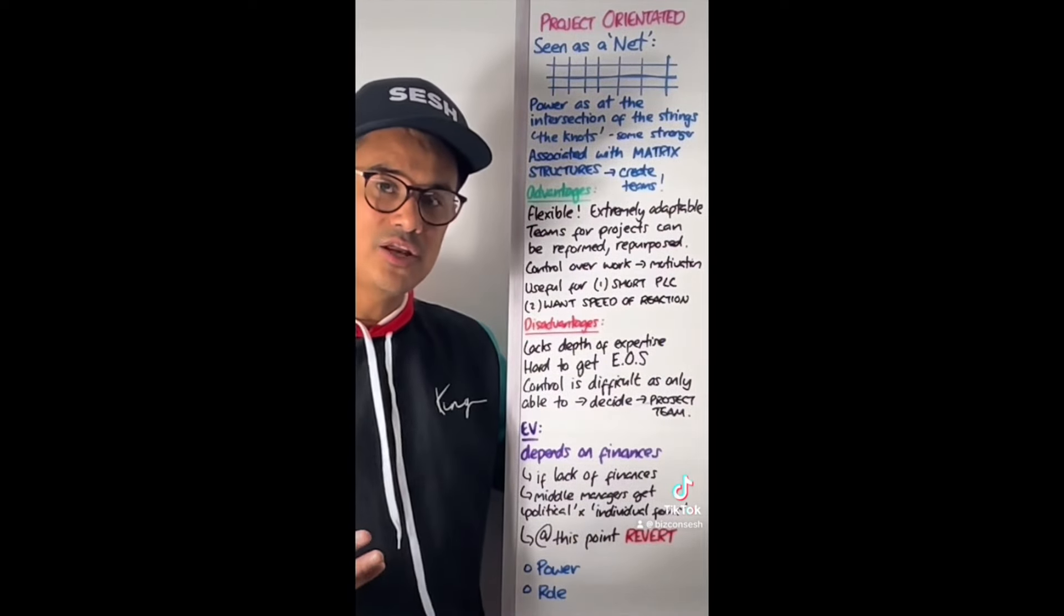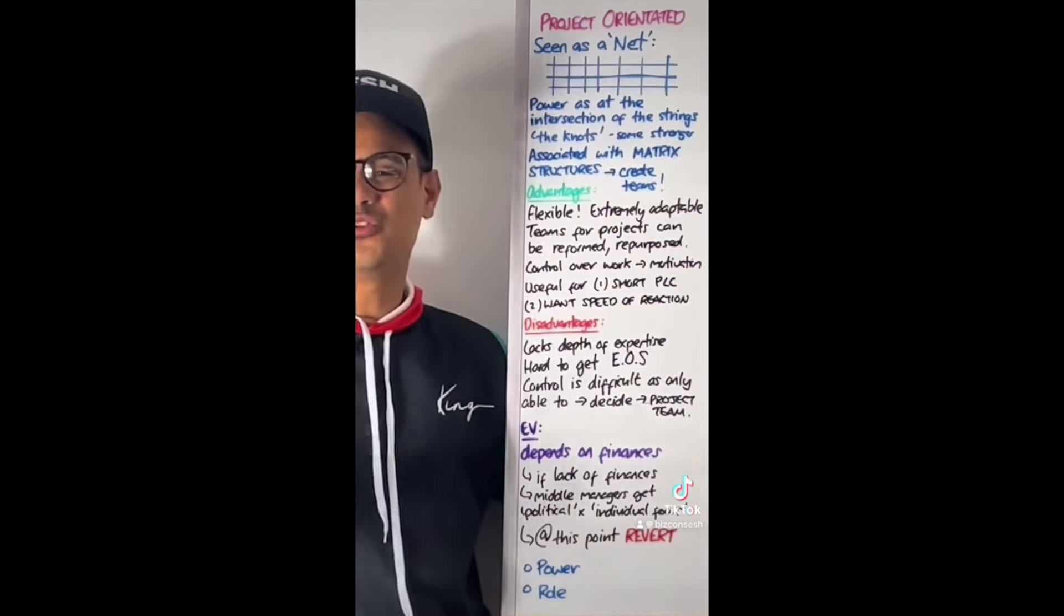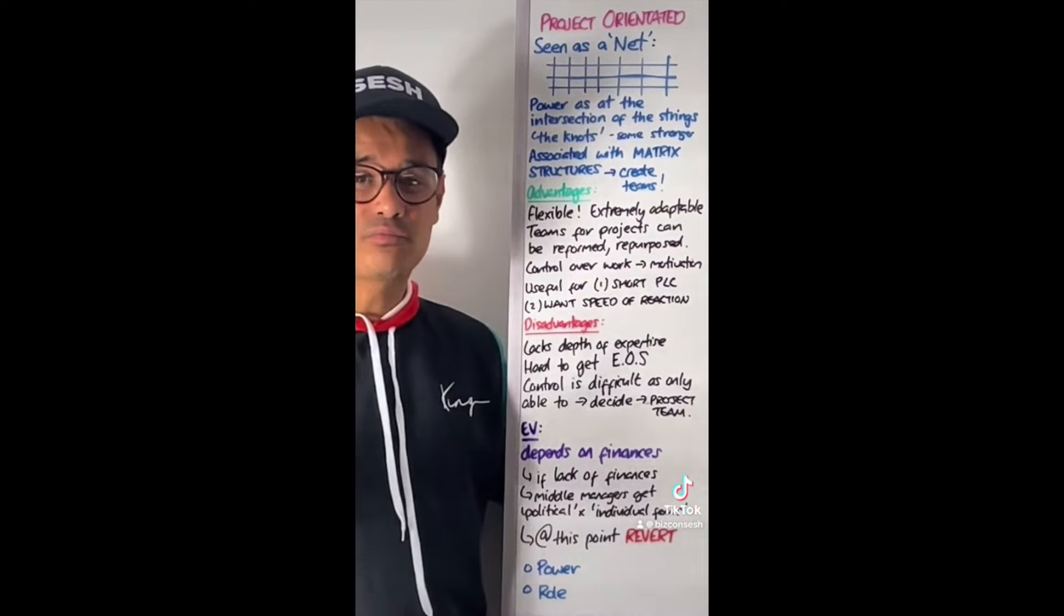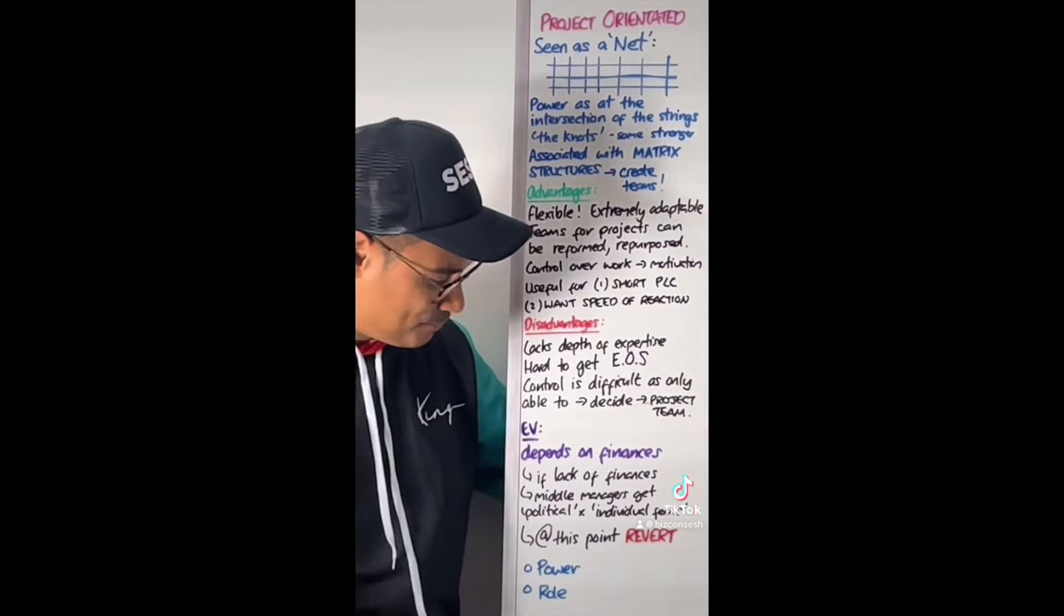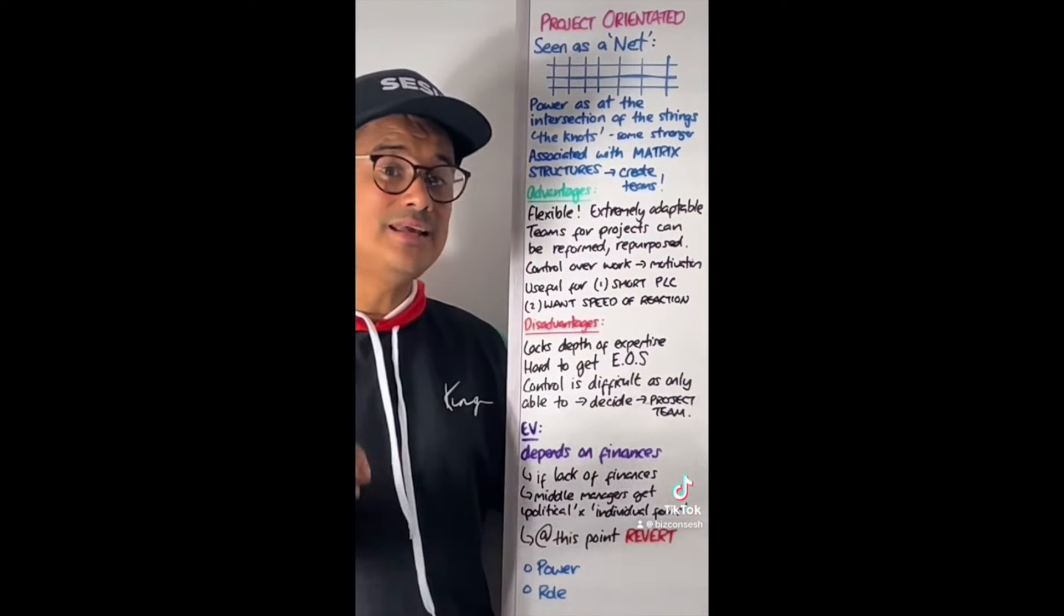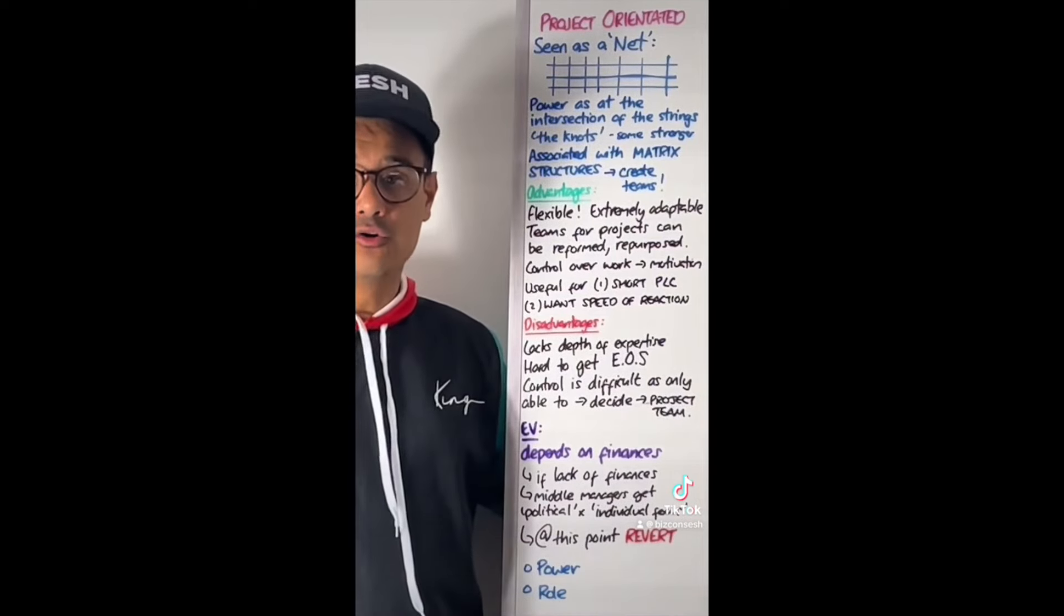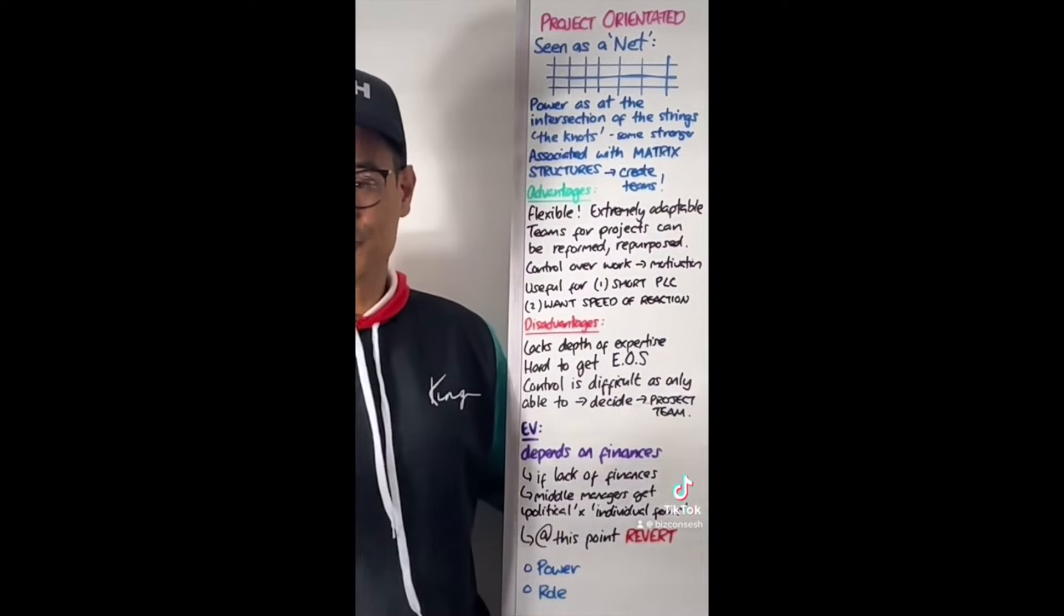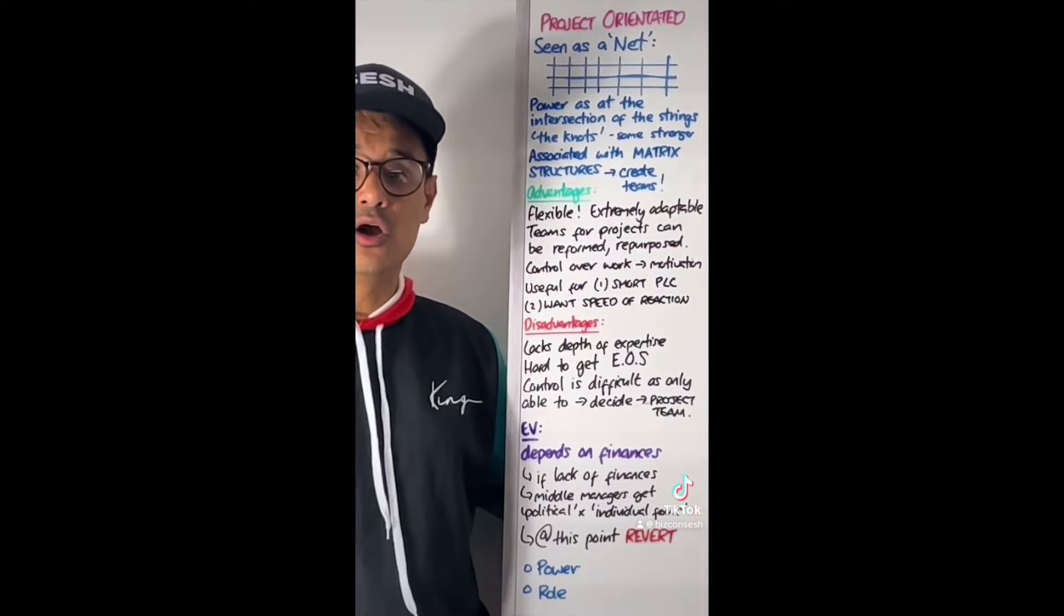The flaw and breakdown of task culture is when finances run out. It depends on finances - if finance are scarce, there's not enough finances available, that's when problems happen. Those knots, those middle managers, they might get a bit salty, they might get political. If they get political, they start to focus on their own individual targets and wants, and it starts to break down the task culture. In that case, managers need to revert to a power or role culture, whatever makes sense for the business.